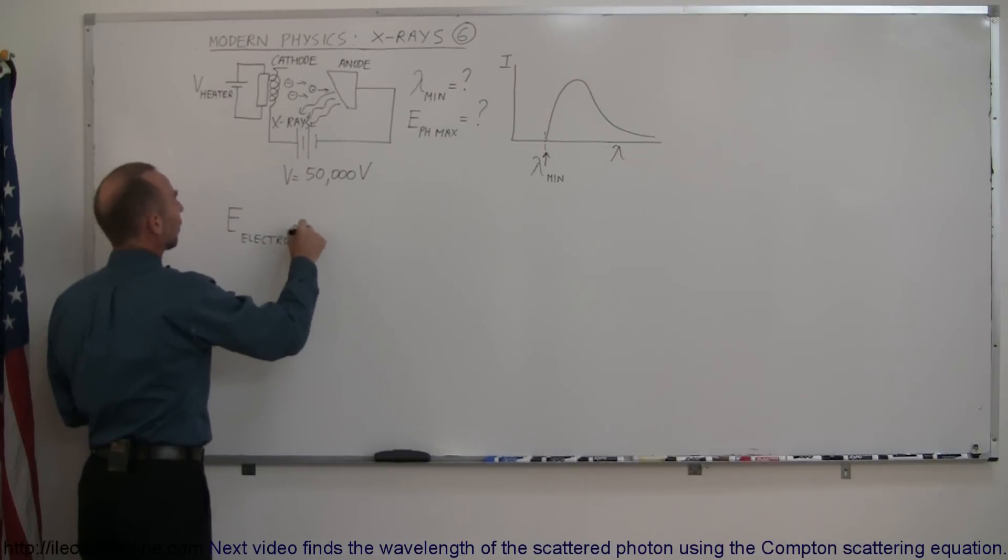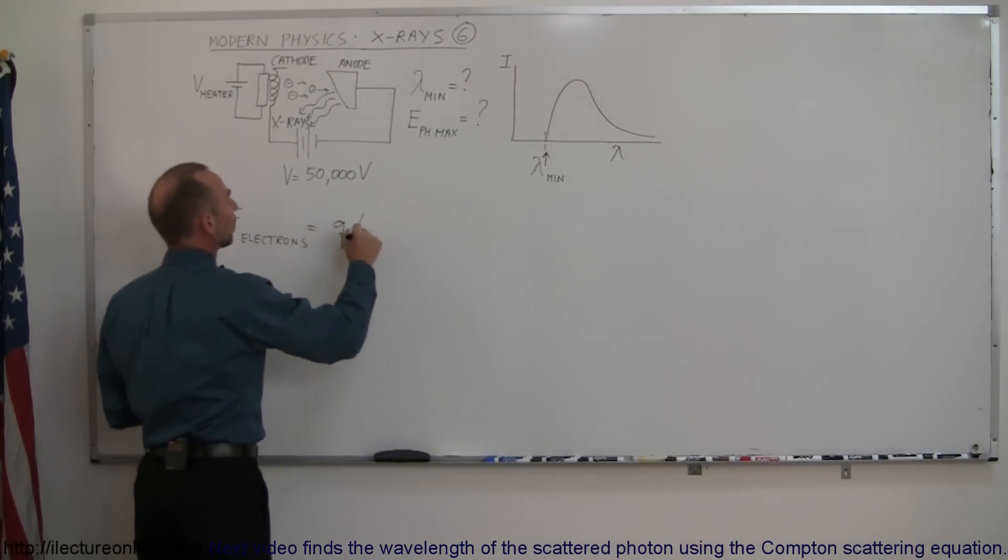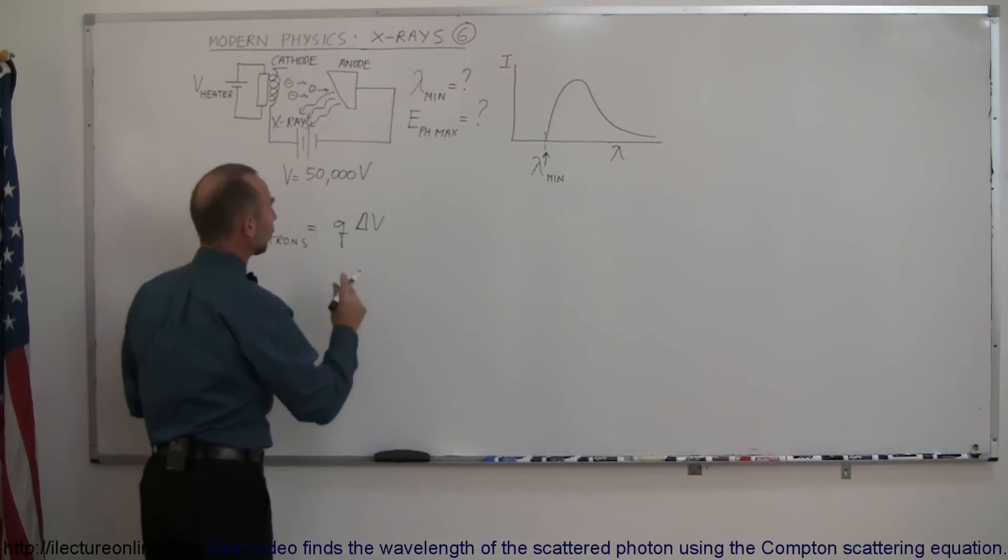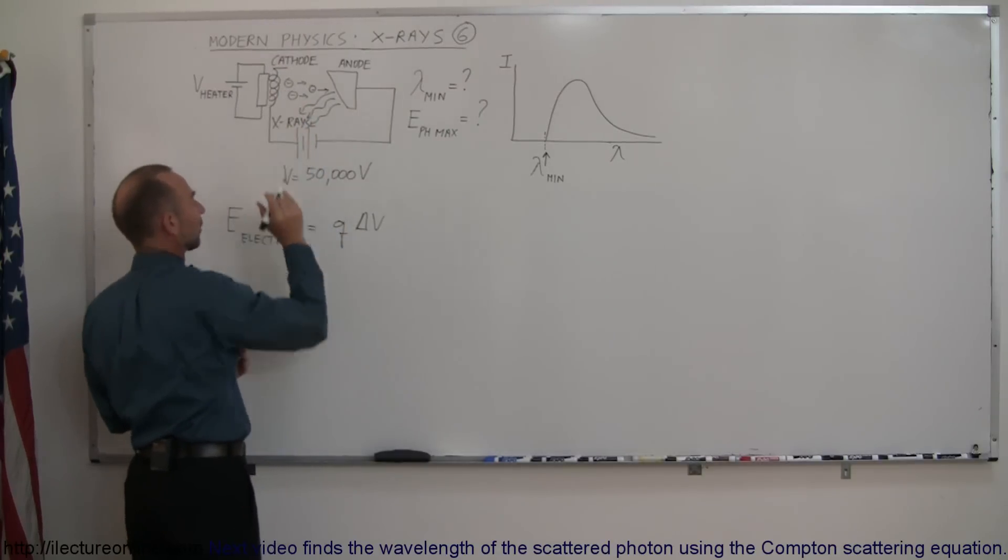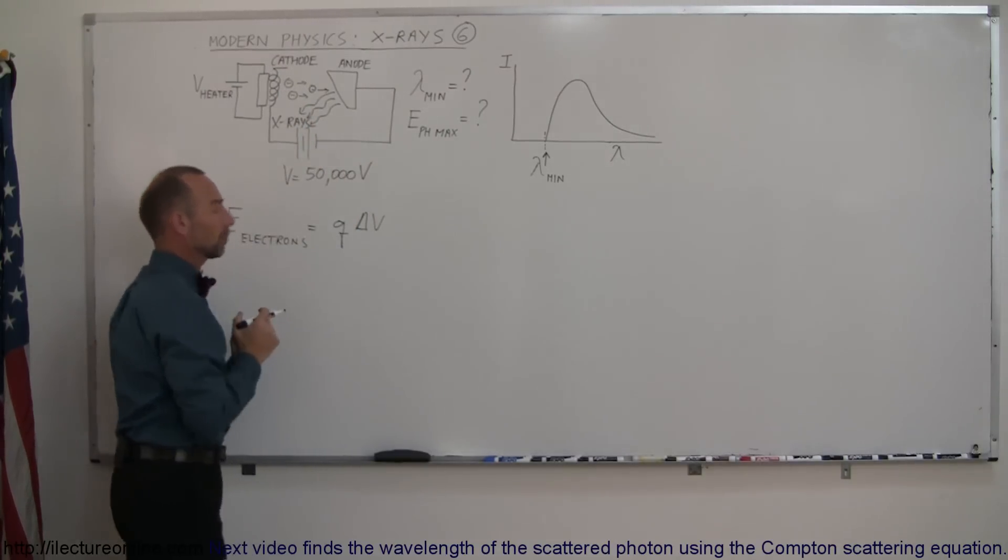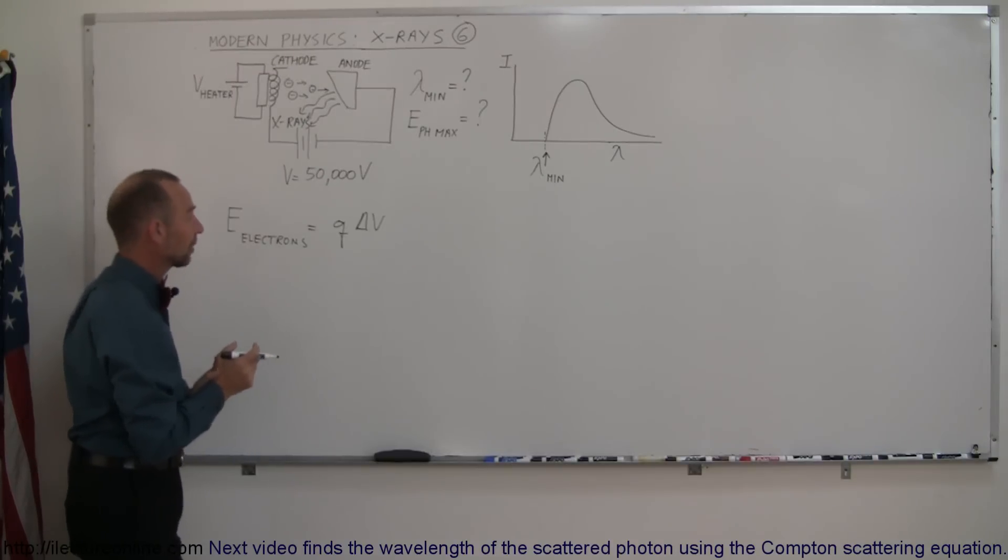And the energy of the electrons is equal to the charge Q times the potential difference delta V. So in this case the charge is of course the charge of an electron and delta V is of course the voltage applied to our X-ray machine. In this case for example 50,000 volts.